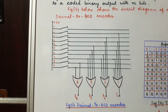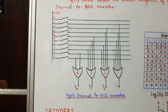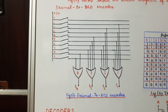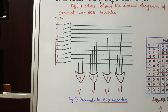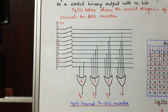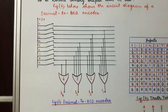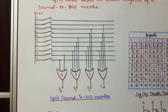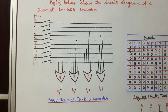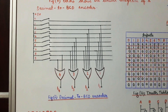From this circuit diagram we find that if we press switch 0, then all the OR gates are inactive and so the output B4 B3 B2 B1 is 0000, which is the BCD equivalent of decimal digit 0. Similarly, if we press switch 1, then only OR gate 1 is active and therefore the output B4 B3 B2 B1 is 0001, which is the BCD equivalent of decimal digit 1.